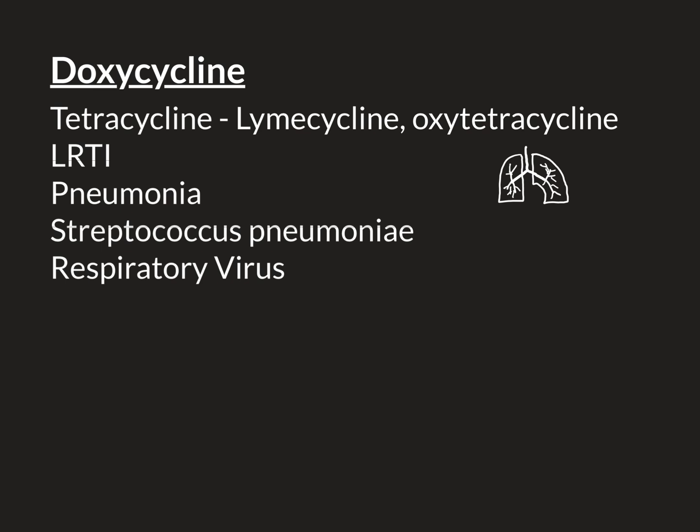Bacterial infections in these lower portions of the respiratory tract are extremely dangerous because they destroy the ability of the lungs to bring in oxygen and remove carbon dioxide. If this infection isn't controlled — either by the immune system or by antibiotics — the individual will eventually die from respiratory failure. Indeed, prior to the days of antibiotics, these infections would often have been fatal.